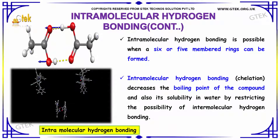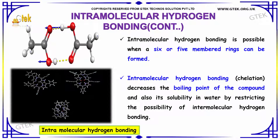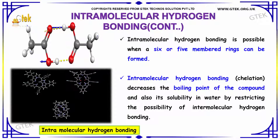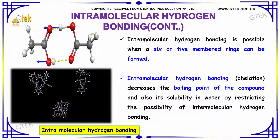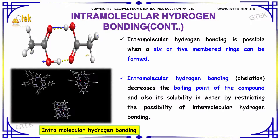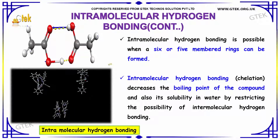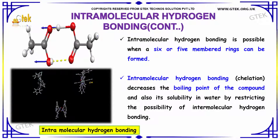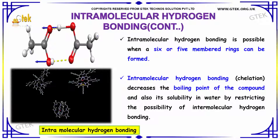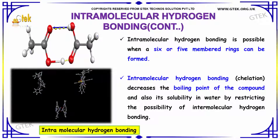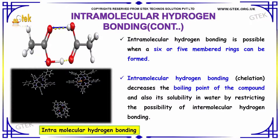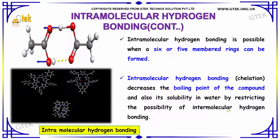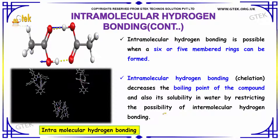Intramolecular hydrogen bonding is possible when a 5 or 6-membered ring can be formed. Intramolecular hydrogen bonding, or chelation, decreases the boiling point of the compound and also its solubility in water, by restricting the possibility of intermolecular hydrogen bonding.